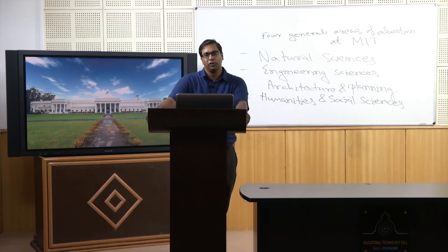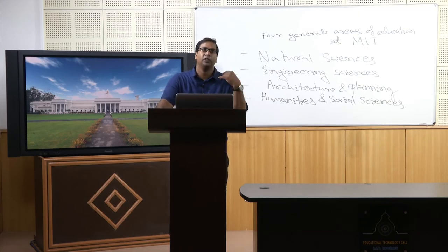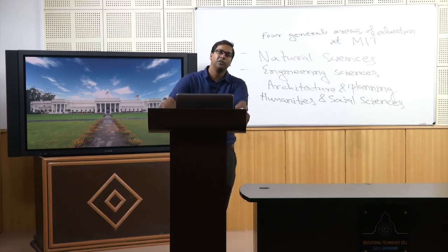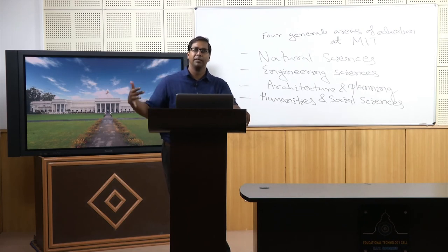The failure of big technology like large dams and ethical questions in genetic engineering all led to questioning the assumed value neutrality of science and technology. There are many controversial debates arising within genetic engineering — regarding cloning, human cloning, genetically modified crops — and regarding the construction of big dams and the human, environmental, and economic costs involved. All these things led to more and more appreciation of the role of humanities and social sciences in academics in general and their positioning in technology institutes in particular.